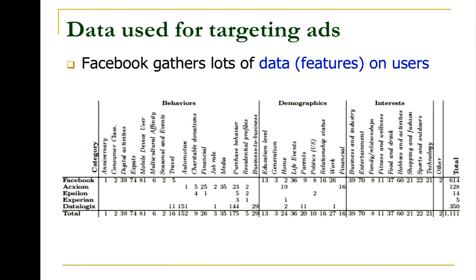In addition, what Facebook does in certain countries is link up online profiles with offline data. Offline data is what credit card companies and banks collect about you. There are companies like Acxiom, Epsilon, Experian, and Datalogix — traditionally known as offline data brokers — that generate your credit scores. Facebook has connected both in certain countries. So you might think you're anonymous online, but if you're in the US or Germany, there's a good chance your offline credit profile has been connected to your online profile, and all this data is available for advertisers to target you.